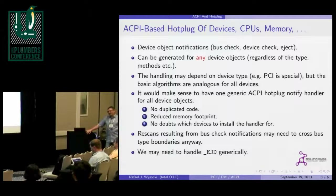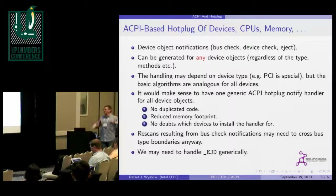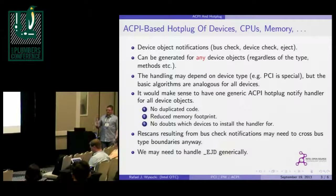In ACPI, devices have children and parents. If a parent is removed — that is, we have a device check for a parent and it's gone — this means that all children below it are also gone. This allows us to handle things like packages. When you have multiple devices in one package and the whole package is regarded as the device in the ACPI namespace, we can get a device check for the whole package, meaning everything under it is gone or has appeared.